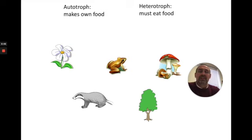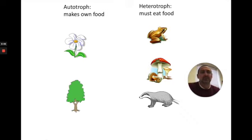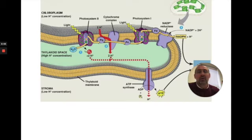Some living things make their own food. Other living things have to eat food. And if we're going to put these two into categories, we'll call them autotrophs, which make their own food, and heterotrophs, which have to eat food. Only autotrophs can perform photosynthesis.